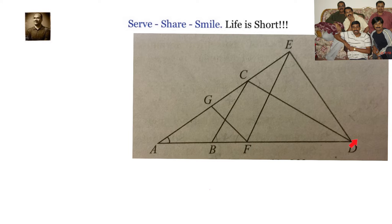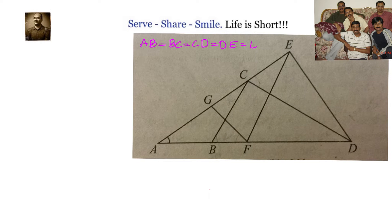Let's look at this problem related to geometry triangles. We have a triangle ADE in which we have been given that AB equals BC, BC equals CD, CD equals DE, DE equals EF, EF equals FG, and FG equals GA. We have to find out what is the angle DAE.